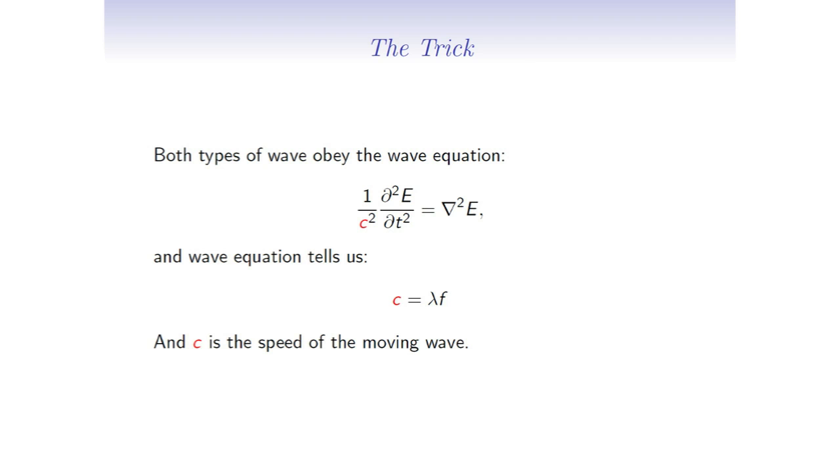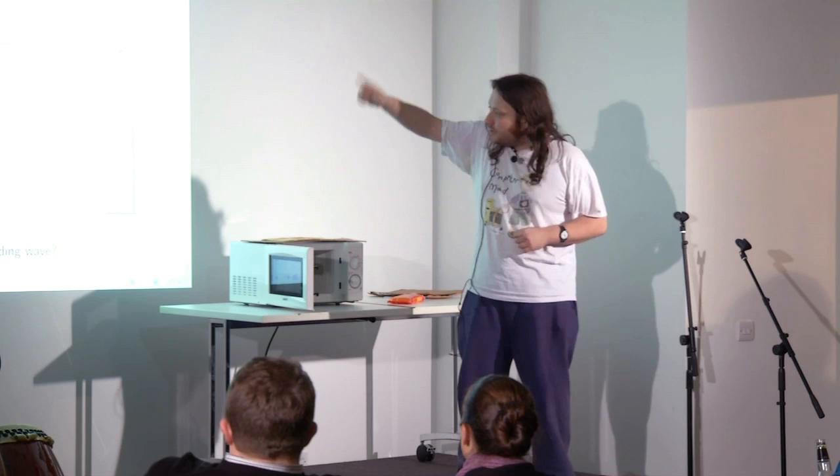So what do these two things have in common? Well, I told you the thing that they have in common is this wave equation. There's a number in it here called C, which is in red. And what the wave equation tells us is for both these types of special waves, C is what you get when you multiply the wavelength by the frequency, and it turns out for the moving wave it's also the speed. Now the wavelength is how long it takes to go up and down, and the frequency is how many times it goes up and down a second.